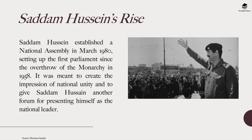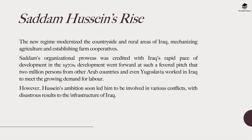Saddam Hussein established a national assembly in 1980, setting up the first parliament since the overthrow of the monarchy in 1958. This was meant to create the impression of national unity and give Saddam another forum for presenting himself as a national leader. His regime modernized the countryside, mechanizing agriculture and establishing farm cooperatives. Development went at such a fevered pitch that two million people from other Arab countries and even Yugoslavia worked in Iraq to meet the growing demand for labor.